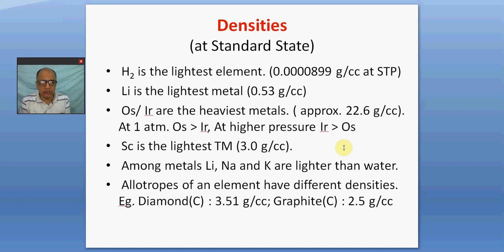And the lightest element, as you know, is hydrogen gas. Its density is very small, 0.0000899 or approximately 0.00009 gram per cc or gram per milliliter. Among the metals, lithium is the lightest metal, 0.53, lighter than water. Osmium and iridium are the bracketed highest, just like some of you secure the bracketed highest mark in some subject.